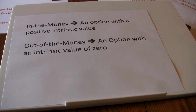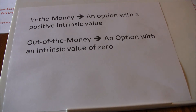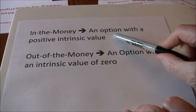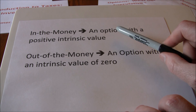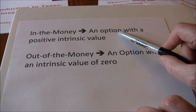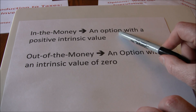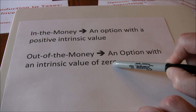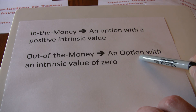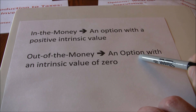The last thing we're going to introduce in this video is the idea of in-the-money versus out-of-the-money options. An in-the-money option is any option with a positive intrinsic value. In our example, the put option, which had an intrinsic value of $5.00, was in the money. The call option, which had an intrinsic value of zero, was not in the money. An in-the-money option, if it expired today, would be worthwhile to exercise. An out-of-the-money option is one with an intrinsic value of zero — our call option is out-of-the-money, and if it expired today it wouldn't be worth anything to exercise.